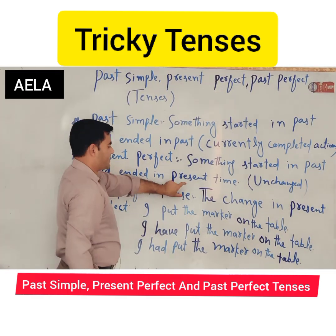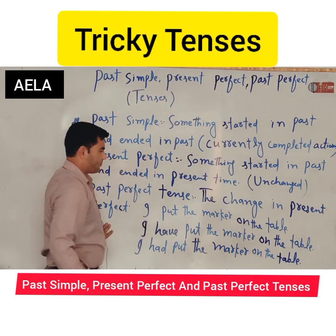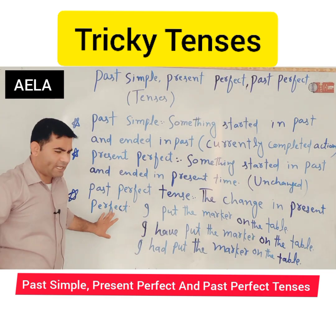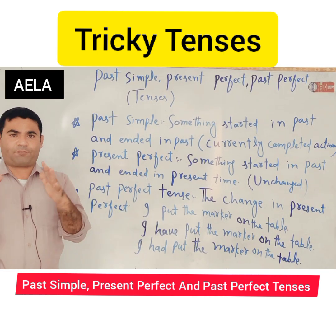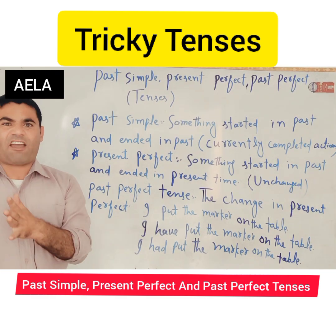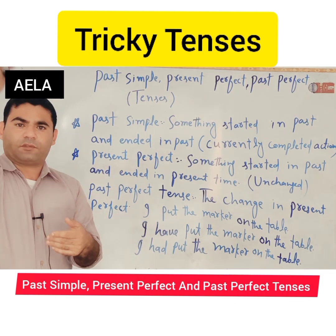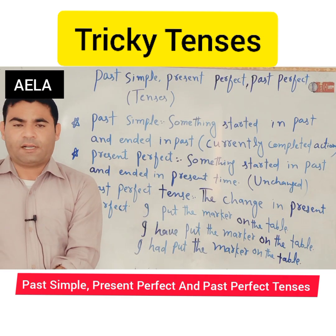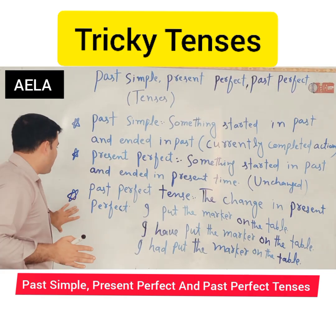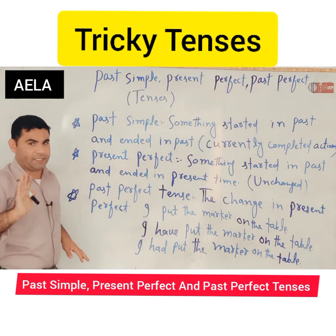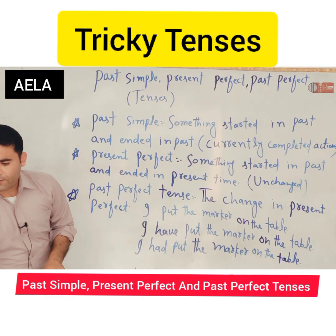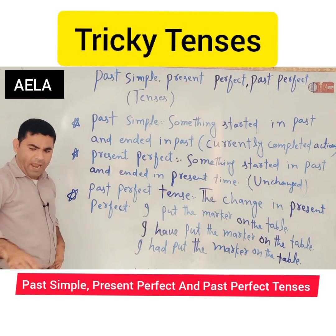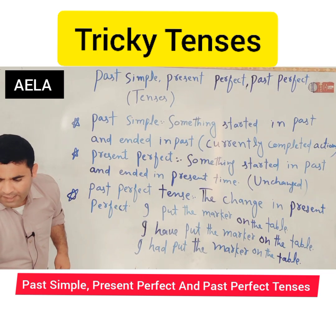Now past perfect tense is the change in the present perfect tense. Let's suppose I put a marker here on the table. As long as the marker is on the table, I'll be telling people 'I have put a marker on the table' — using present perfect tense. Even if days, weeks, or months pass, as long as the marker is present on the table, I'll be using present perfect tense. But remember, in past perfect tense, time doesn't matter — change matters. If I look back even seconds later and find my marker missing, then I shift to past perfect tense.